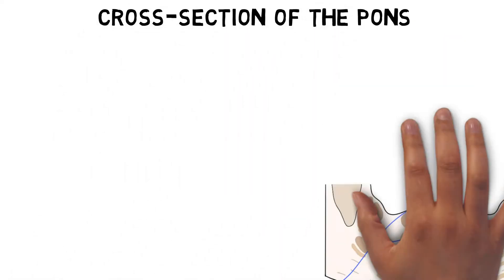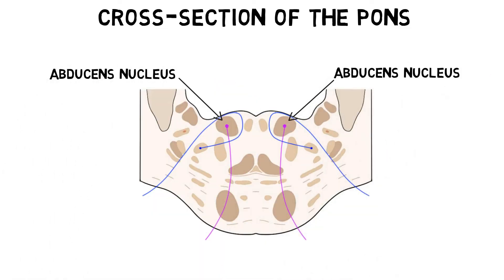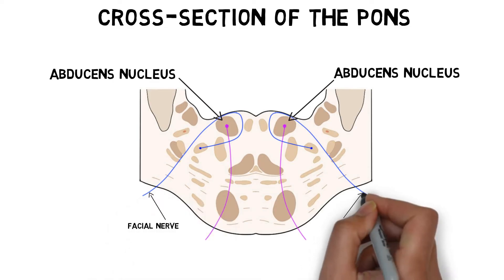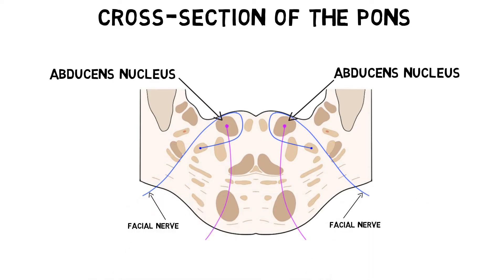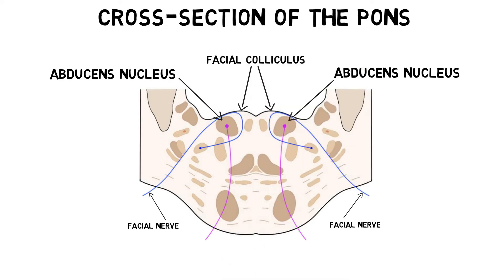The abducens nerve originates in the abducens nucleus, which is located in the pons. Fibers from the facial nerve wrap around the abducens nucleus, and the combination of the nucleus and facial nerve fibers creates a bulge in the floor of the 4th ventricle, known as the facial colliculus. The abducens nerve fibers exit the brainstem at the junction between the pons and medulla, and supply the lateral rectus muscle on the same side of the head.